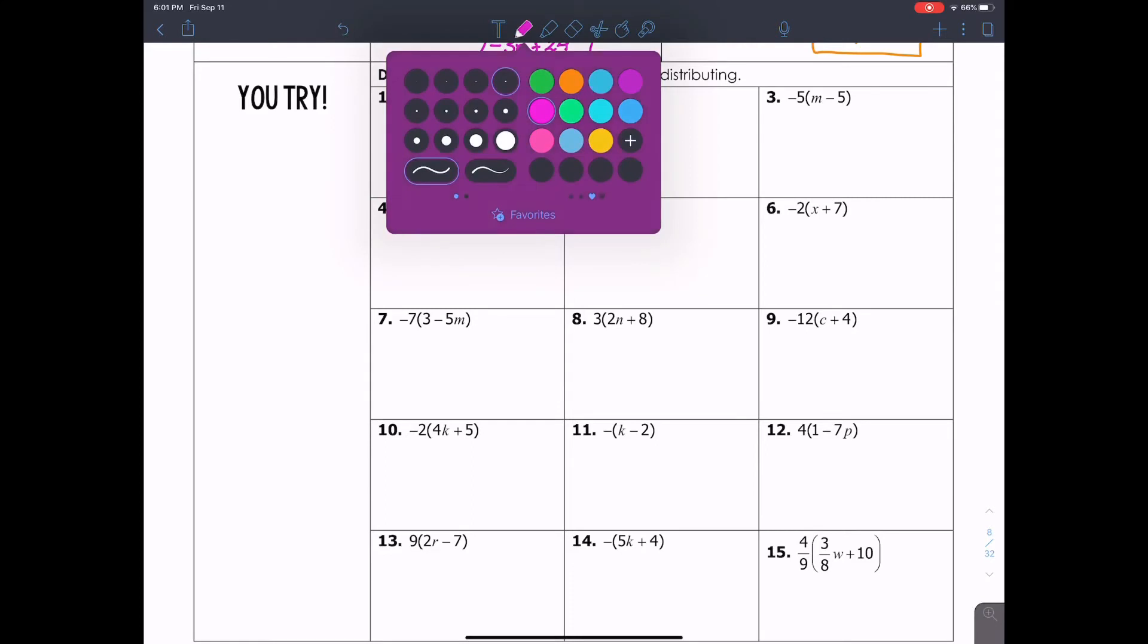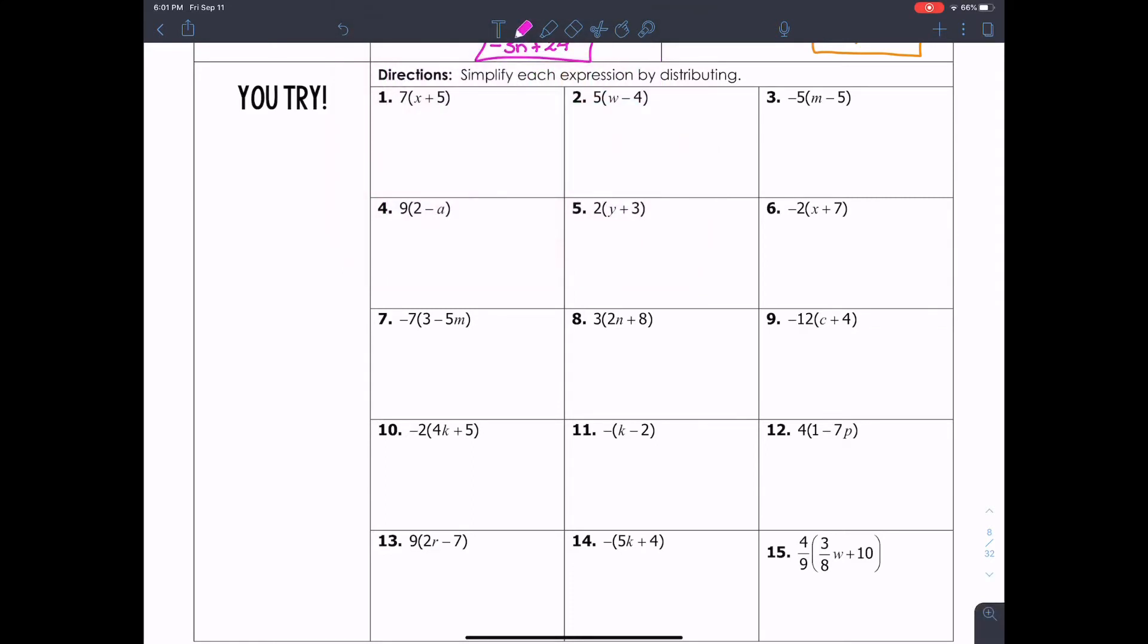I'm going to go through these a little quicker. So let's see how you did. 7 times X is 7X. 7 times 5 is 35. 5 times W is 5W. 5 times negative 4 is negative 20. Negative 5 times M. Negative 5M. Negative 5 times negative 5. 25.